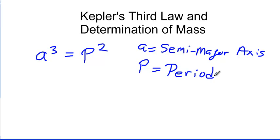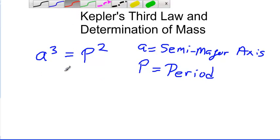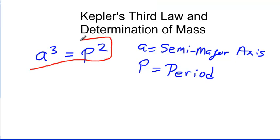Another thing we can measure relatively easily is the semi-major axis. If we can see it, we can measure it — how far away the Earth is from the Sun, or how far the Sun is from the center of the galaxy. Now, the form a cubed equals p squared is a very simplified version of the equation. It works for the solar system — for Earth, Jupiter, Saturn, and Mercury, it always checks out.